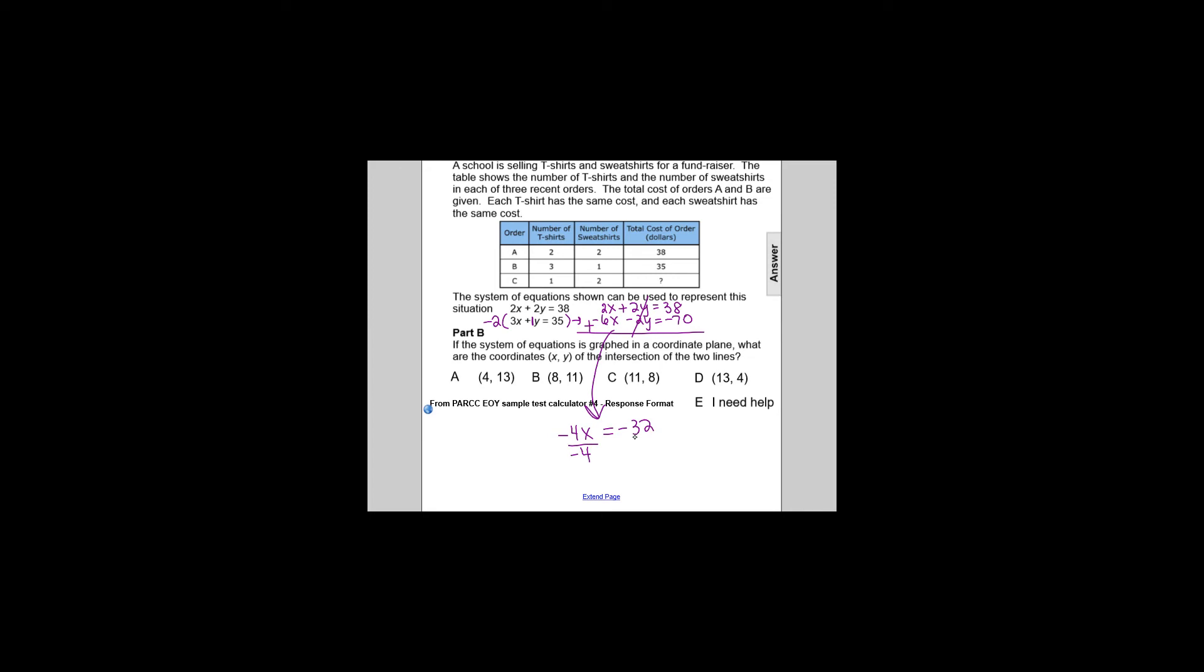Dividing both sides of the equation by negative 4, we get that x equals 8. If we have the x value, we can find the y value by substituting in that value into one of the original equations. Let's use the second equation, 3x plus y equals 35.